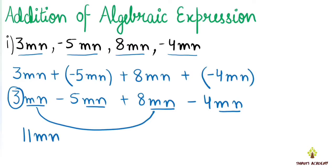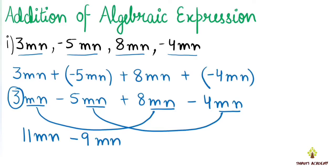Now, minus 5mn and minus 4mn both have minus signs. Minus plus minus gives us minus, so 5 plus 4 is 9mn. We now have plus 11mn and minus 9mn.